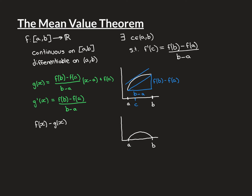We then construct a third function on [a, b] given by f(x) minus g(x). In the picture, we take the white function and subtract the blue linear function g, obtaining a new curve defined on [a, b]. Crucially, the value of this new function at a equals zero, and the value at b equals zero, because f and g agree at both endpoints. This means we will be able to apply Rolle's Theorem to this third function.